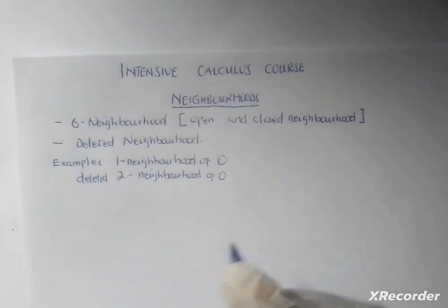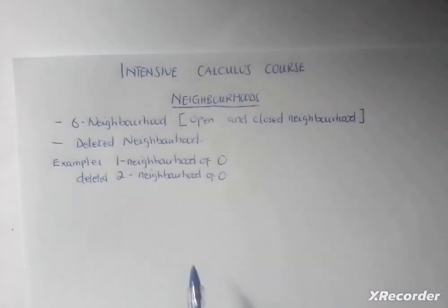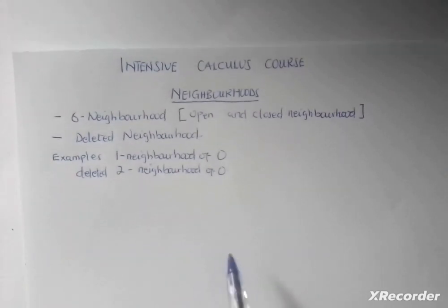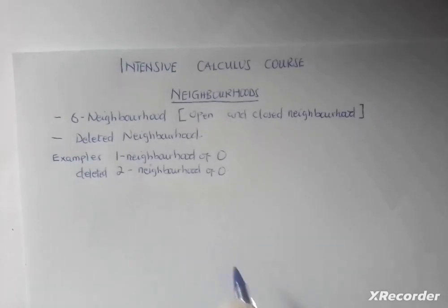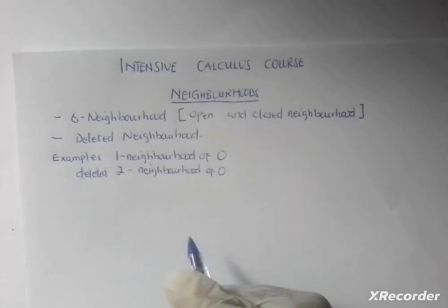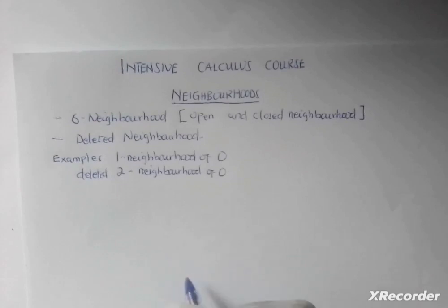Neighborhood basically means the people that live around you, or some distance or any form of space around you — that is basically neighborhood. How is neighborhood used in calculus and what is its meaning? How do we solve problems with neighborhood? When you say neighborhood, I'm going to start from intervals which we have talked about in the previous videos.